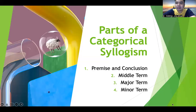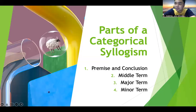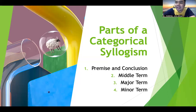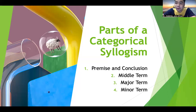The parts of categorical syllogism are the premise and conclusion. We have talked a lot about premise and conclusions in the first mental operation of simple apprehension. There are indicators to show which is the premise and which is the conclusion. The conclusion is always indicated by the words therefore, hence, or thus. In categorical syllogisms, we usually use the word therefore.